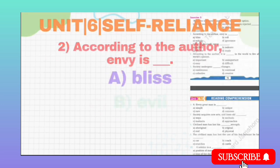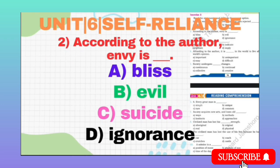MCQ number 2 is: According to the author, envy is a ___. It means according to the author, what is envy? Option A: Bliss. Option B: Evil. Option C: Suicide. Option D: Ignorance. The correct option is D, Ignorance.